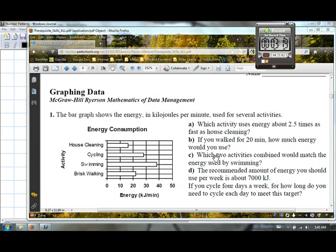Part C. Which two activities combined would match the energy used by swimming? If we added two activities together, which ones would match the energy used by swimming? I imagine house cleaning at 15 and brisk walking at about 22 would make about 37, which would be about right where swimming is, just about.